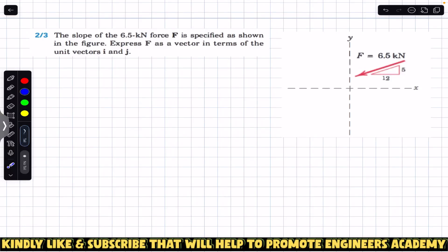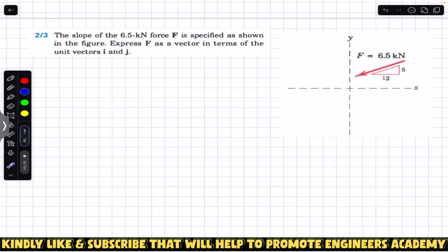Welcome back to Engineers Academy. Do hit the subscribe button if you are here for the first time. Now we are going to solve this problem which says that the slope of a 6.5 kN force F is specified as shown in the figure. Express this force F as a vector in terms of unit vectors i and j.